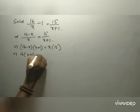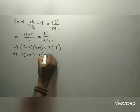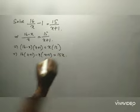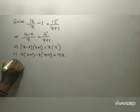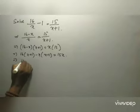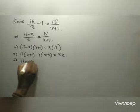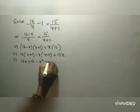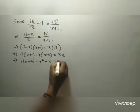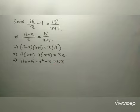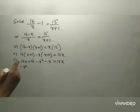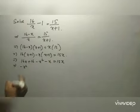Expanding: 16 into x plus 1 minus x into x plus 1 is equal to 15x. This gives 16x plus 16 minus x squared minus x is equal to 15x.